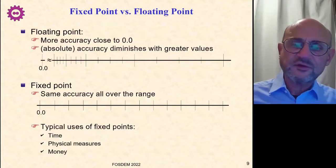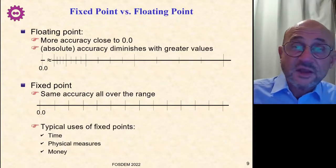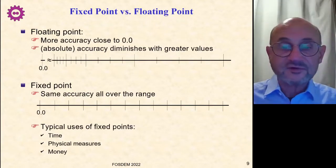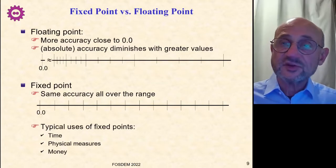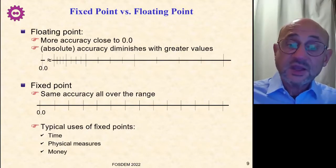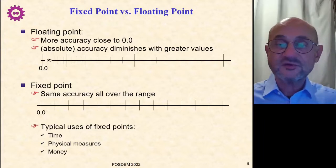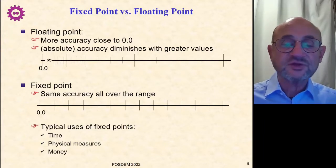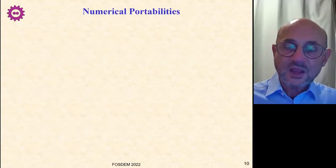Also, for physical measures, that can be quite useful because most of physical devices have linear scale. I've never seen a logarithmic voltmeter, for example. They are all linear. So a linear scale is a better representation, a better modeling of a voltmeter. And of course, money must be represented by fixed points. By the way, it is forbidden by law to represent money with floating points because you cannot have approximations the way it works with floating points.